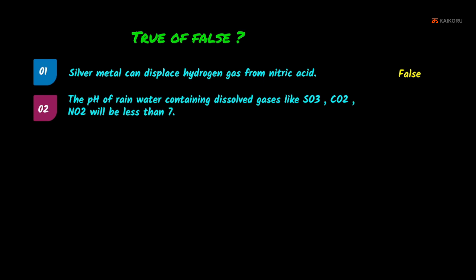Second: the pH of rainwater containing dissolved gases like SO₃, CO₂, and NO₂ will be less than 7. These gases in the atmosphere react with rainwater to form acids, making the rainwater acidic with pH less than 7. The statement is True.